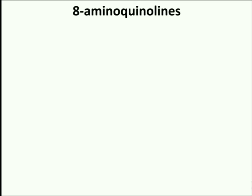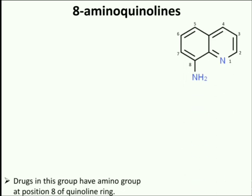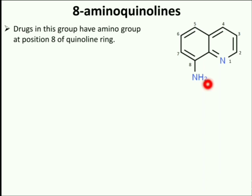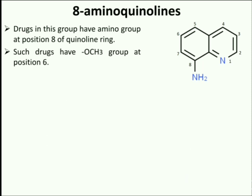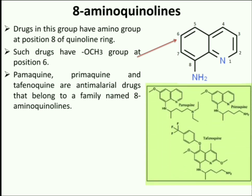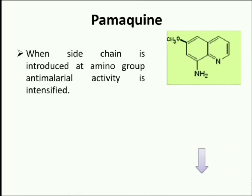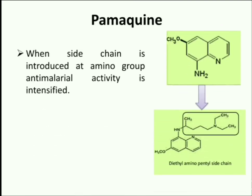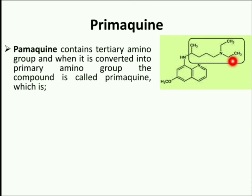Next is the Structure Activity Relationship of 8-Aminoquinolines. Drugs in this category contain an amino group at position 8 of the quinoline ring system and also contain a methoxy group at the 6th position. Major drug candidates in this category include Pamaquine, Primaquine, and Tafenoquine. Pamaquine and Primaquine are closely related analogues. Pamaquine is a result of introduction of a bulky amino side chain in place of the amine group of the quinoline ring system. Pamaquine contains a tertiary amino group, and when it is converted to a primary amino group, the compound is called Primaquine.